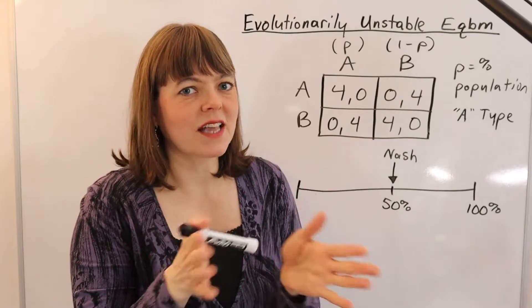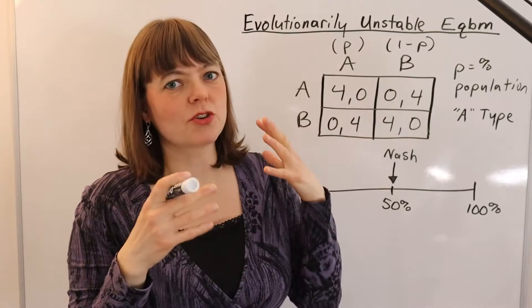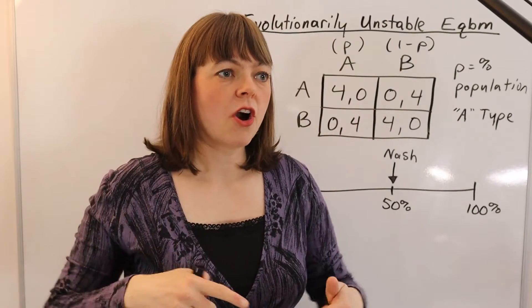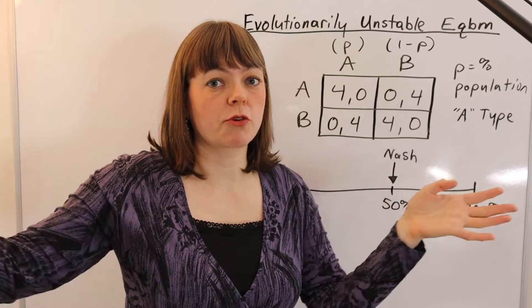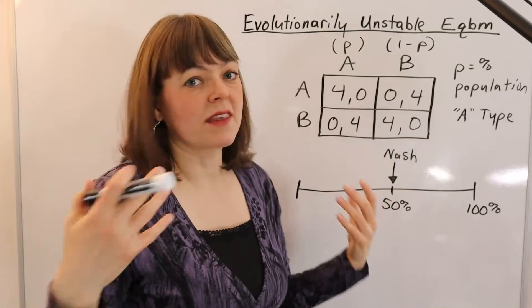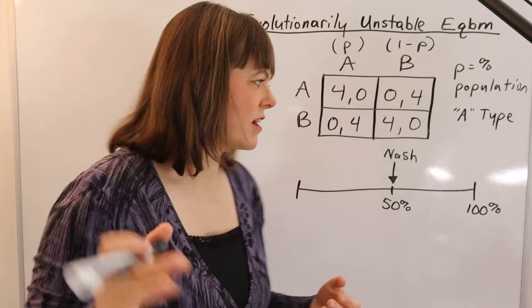Because even if there's a slight tendency for one type to win out over the other, over time, that will lead that part of the population to grow and grow and grow until it crowds out the other type. That's the basic logic here.